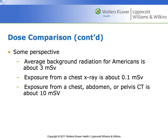The federal government encourages comparing doses to natural background radiation. For Americans, that's about 3 millisieverts per year — the most common sources being the sun or radon gas. The exposure from a chest x-ray is 0.1 millisieverts, and the exposure from a chest, abdomen, and pelvis CT is about 10 millisieverts. These are rough estimates that vary depending on patient size.